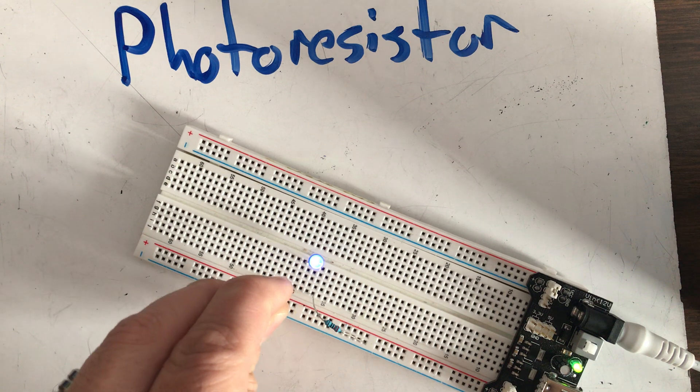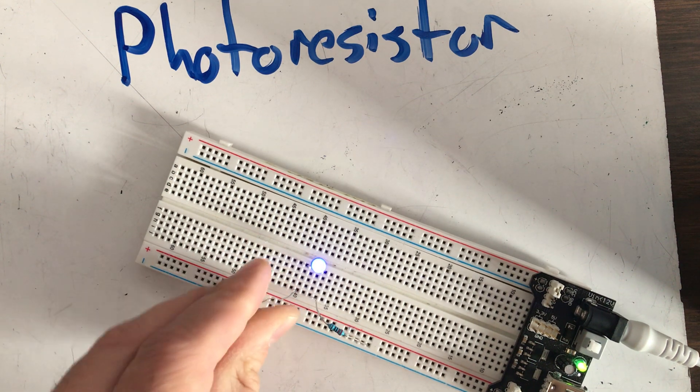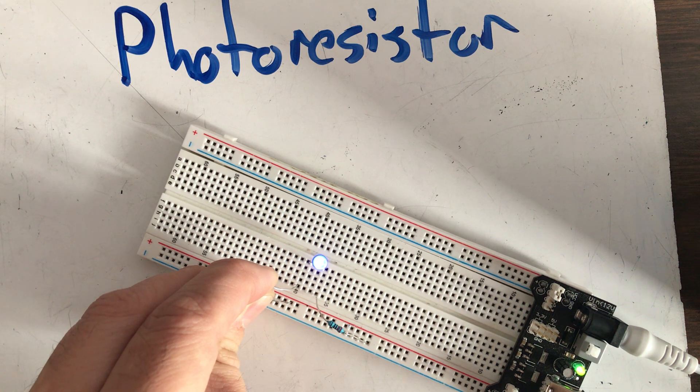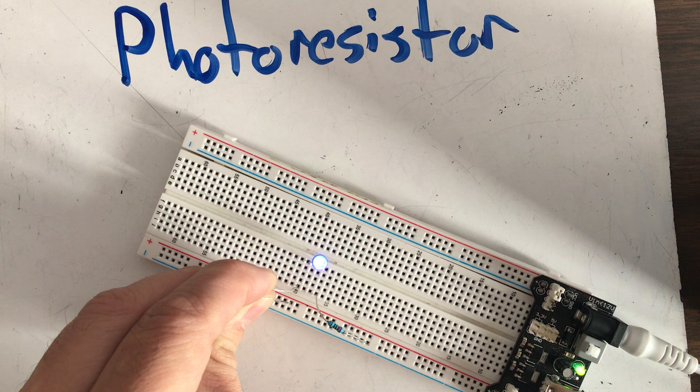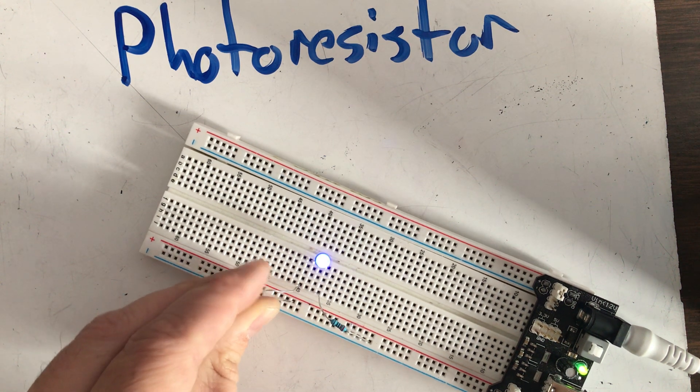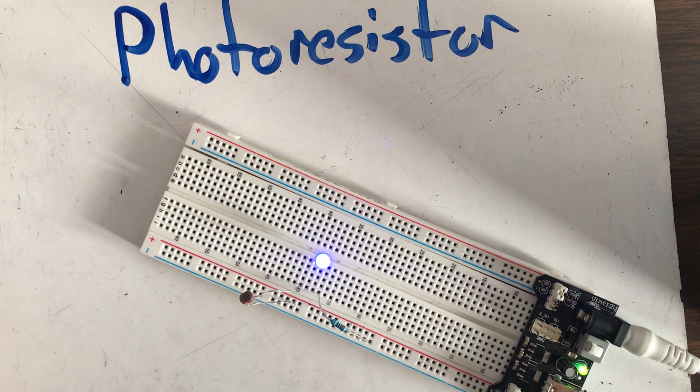So again, when it's in a dark environment, that means that the resistance goes up. When resistance goes up, voltage goes down, which makes my light dim. And then in that brighter environment, the resistance goes down. When the resistance goes down, the voltage goes up, and my light gets even brighter.